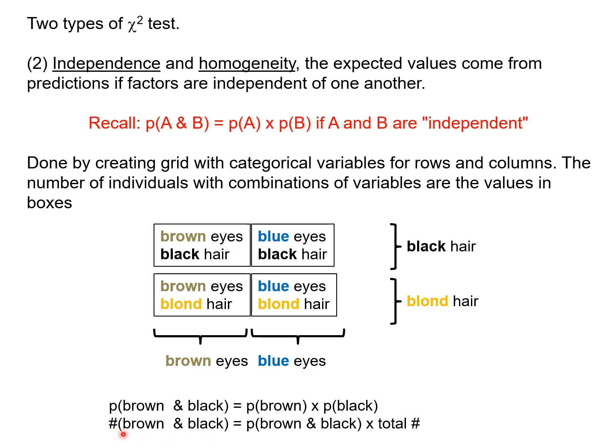So the total number of brown-eyed, black-haired individuals we expect if eye color and hair color are independent would be the probability we calculate here multiplied by the total number of individuals.